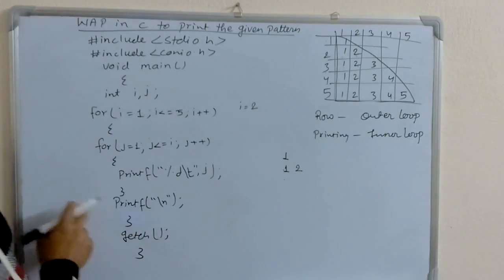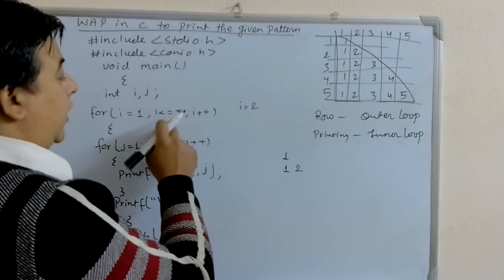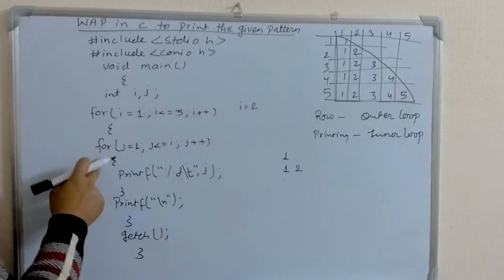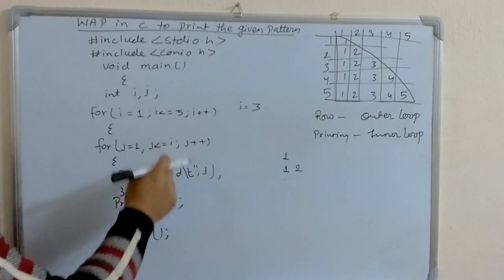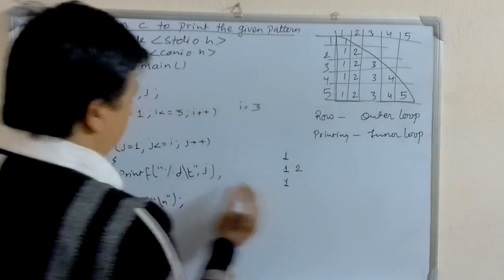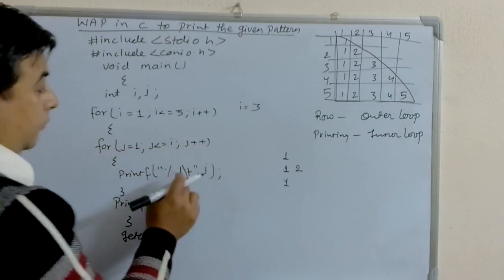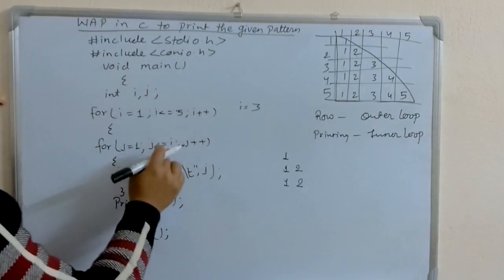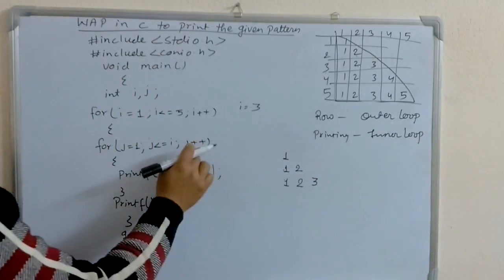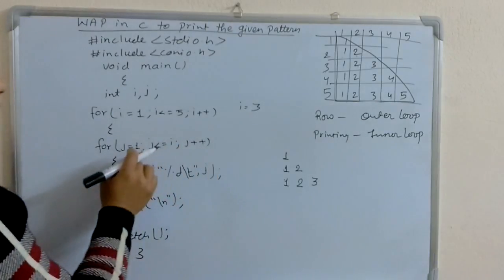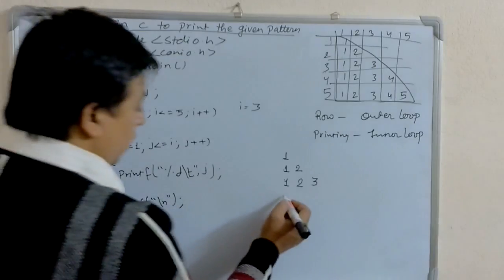The value of i increases to 3. i less than or equal to 5 is true, so it enters the inner loop. j = 1; j less than or equal to i — the value of i is 3, so it is true. It prints 1. j increases to 2; 2 less than or equal to 3 is true, so it prints 2. j becomes 3; 3 less than or equal to 3 is true. It prints 3. Then j increases to 4; 4 less than or equal to 3 is false. It comes out of the loop and goes to the next line.